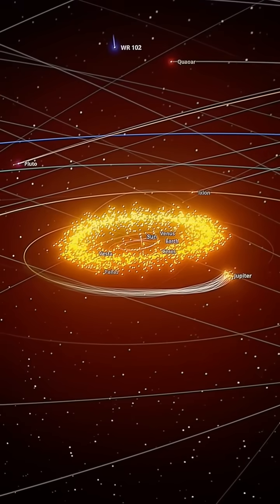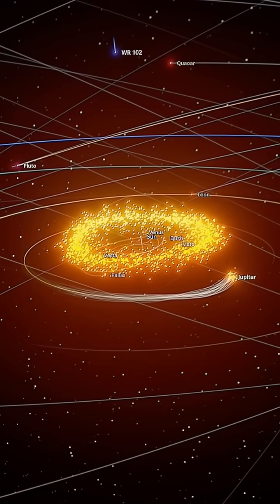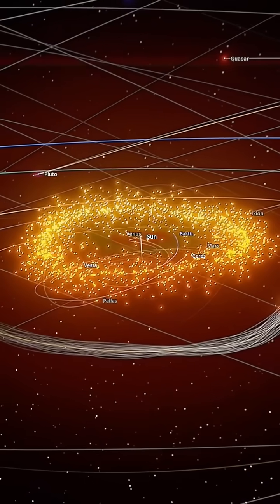The star's massive gravity begins pulling on our entire solar system. The sun moves toward WR-102, dragging its planets with it.